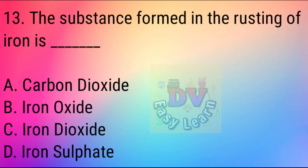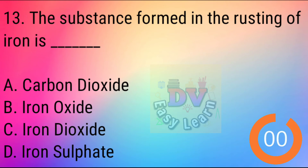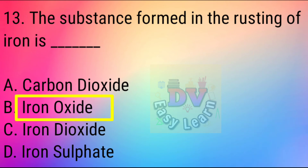Question No. 13: The substance formed in the rusting of iron is — Correct answer: Iron oxide.